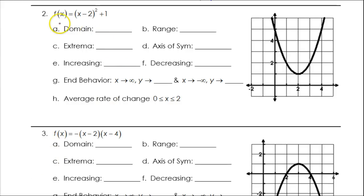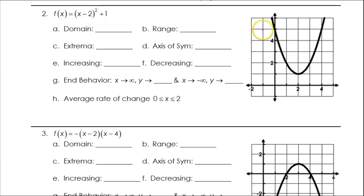Let's continue our work on the characteristics of quadratic functions. So for this problem, again, we have the graph, so the domain is just going to be the x values. How far to the left does it go? How far to the right? It goes left forever and it goes right forever, so the domain will be negative infinity to positive infinity.